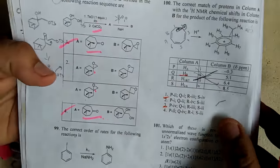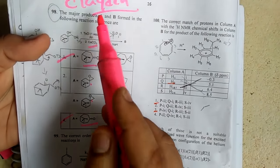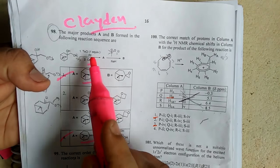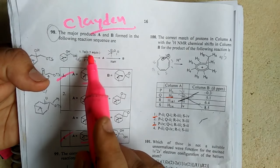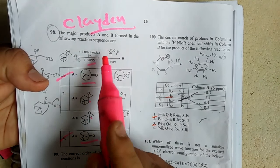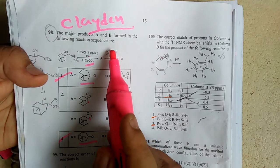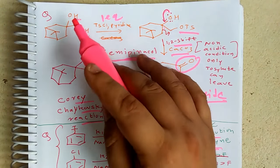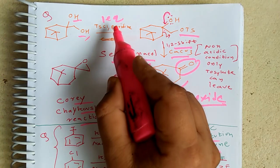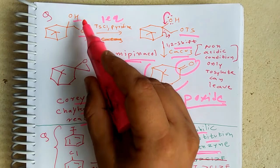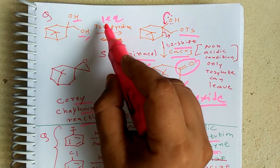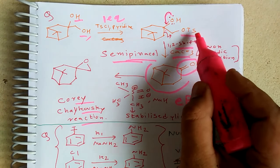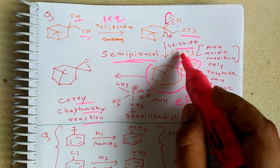The first question is from Clayden. We have a 1,2-diol, which is a vicinal diol, and tosyl chloride is given, making it a semi-pinacol type reaction. The sulfur ylide stabilized reagent used is from the Corey-Chaykovsky reaction. There is a diol with one equivalent of tosyl chloride and pyridine as the base. Among the two OH groups, the primary alcohol is more reactive for tosylation, so the primary OH is converted to OTs.